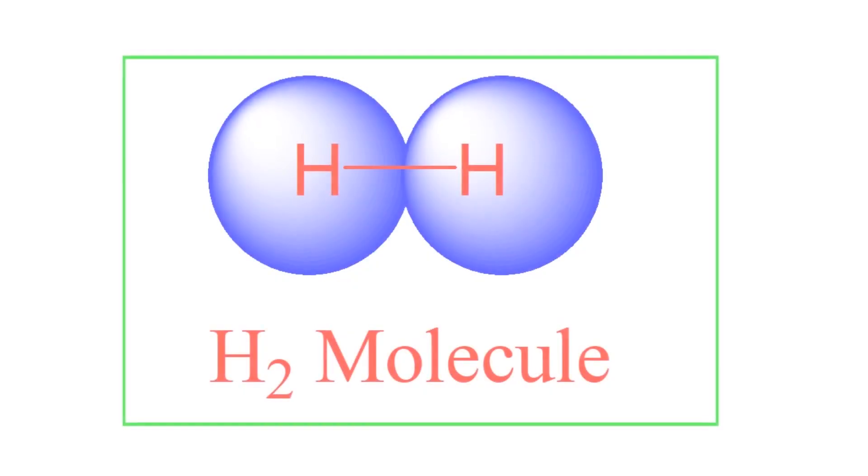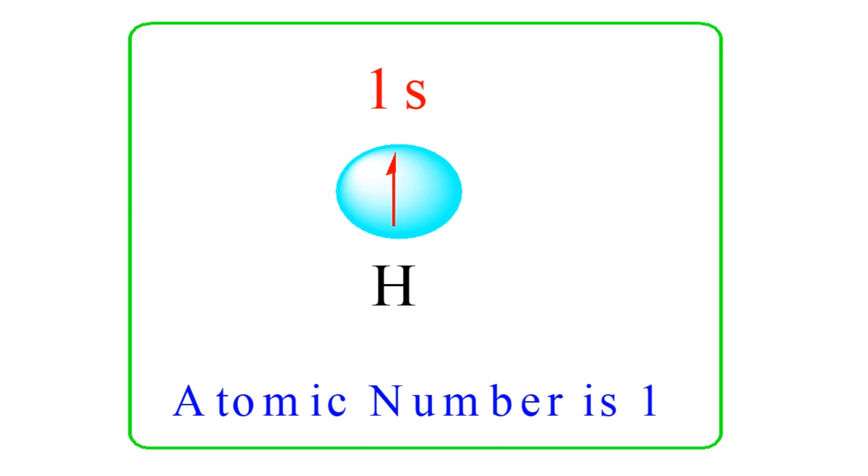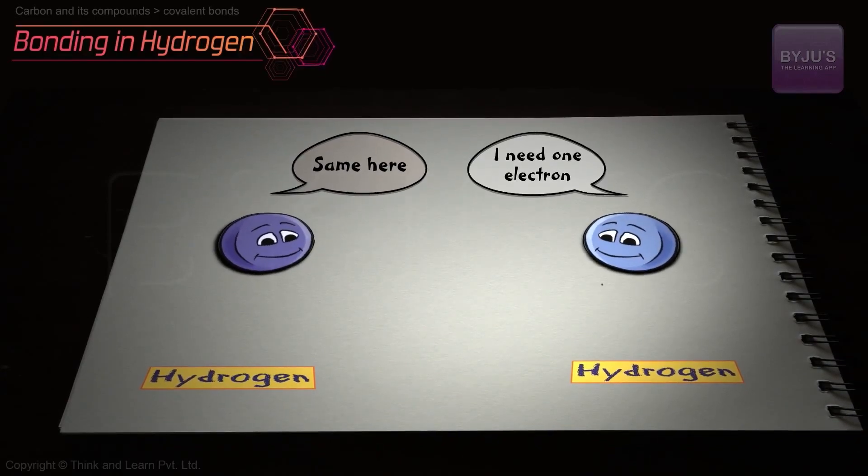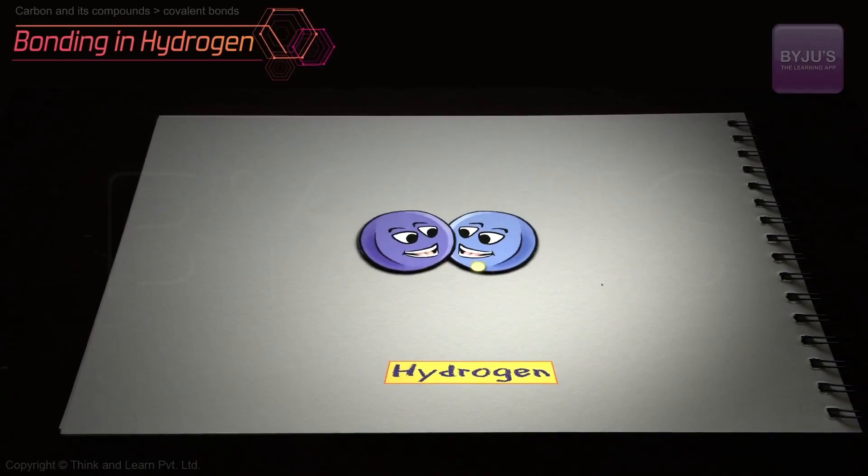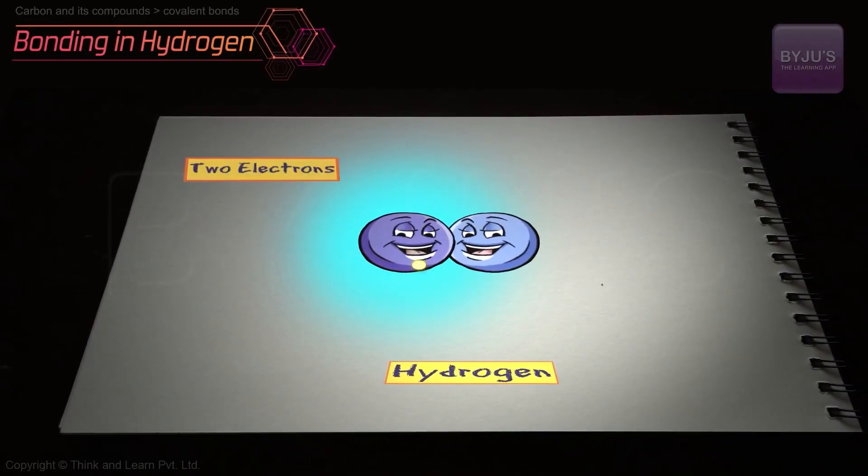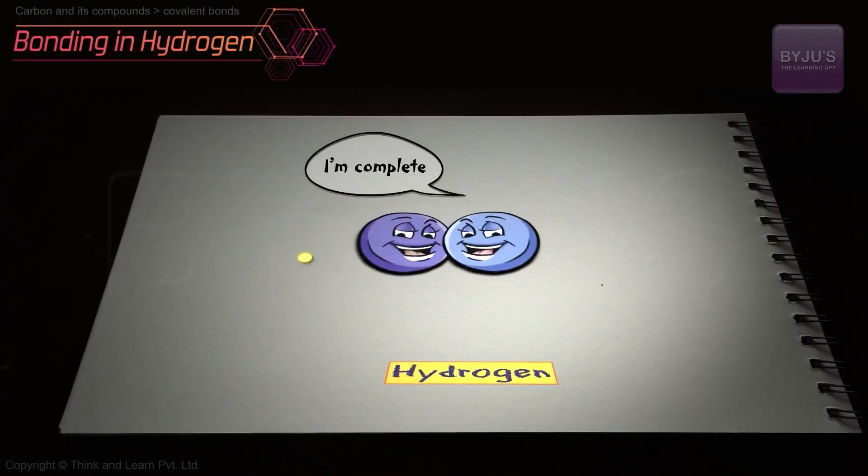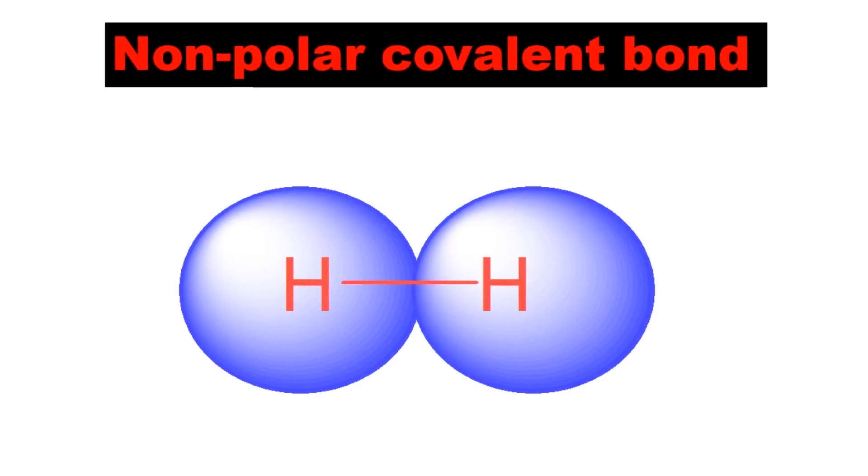Let us discuss some examples. Consider the formation of hydrogen molecule. Hydrogen atom has one electron in its valence shell and its atomic number is 1. To be a stable molecule, it needs to complete its duplet state. Another hydrogen atom has one electron in its valence shell. These two hydrogen atoms share their electrons to form a stable molecule H2 by means of a covalent bond. This is an example for non-polar covalent bond.